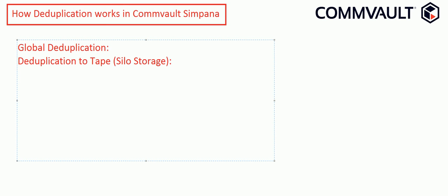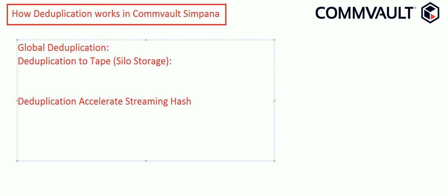I also want to talk about DASH copy. DASH in CommVault Simpana stands for Deduplication Accelerated Streaming Hash. A DASH copy is an operation where a deduplication-enabled storage policy copy sends only unique data to that copy. The DASH copy uses network bandwidth efficiently and minimizes storage resource usage — for example, transmitting only unique data blocks and reducing auxiliary copy job size by up to 90% compared to the original backup job.